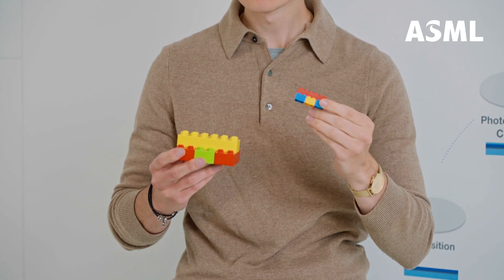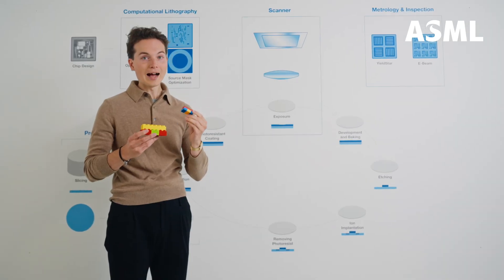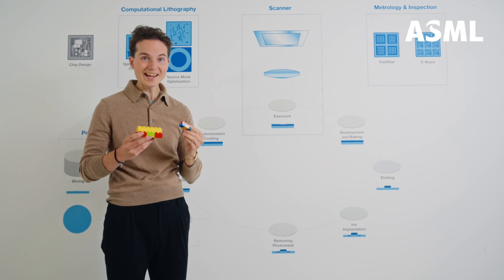Shorter wavelengths mean sharper resolution and smaller patterns. Our latest lithography machines have a resolution of just 8 nanometers, enabling the tiniest patterns ever printed.